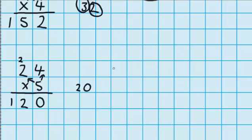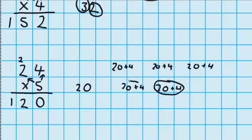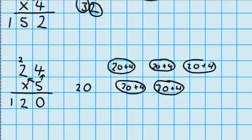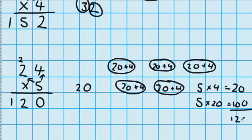We can do a quick check to see that we worked this out correctly. We need 5 groups of 24, so: 20 and 4, 20 and 4, 20 and 4, 20 and 4, 20 and 4 — that's 5 groups. The part where we did 5 groups of 4 is the same as 4 plus 4 plus 4 plus 4 plus 4, and you know that 5 groups of 4 is 20. Then 5 groups of 2 tens — or 5 groups of 20 — is 20, 40, 60, 80, 100. Add them together and we get 120.